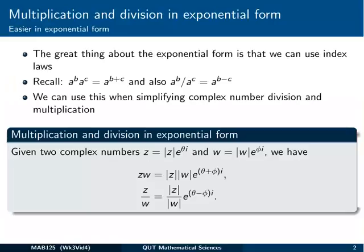First up, the great thing about exponential form is that we can use the index laws. Because we've got the numbers written in a form that's got indices in it, so e to the iθ is just an exponential really. We can use the index laws, things like multiplying a^b and a^c means a^(b+c). And also a^b over a^c means a^(b-c). So that's how we simplify complex number division and multiplication.